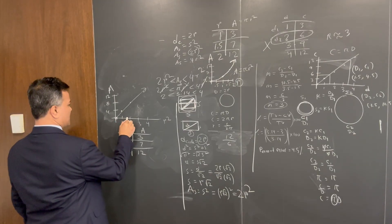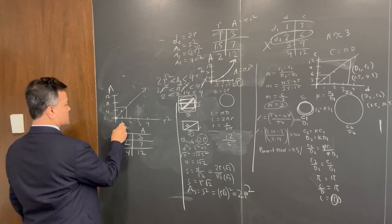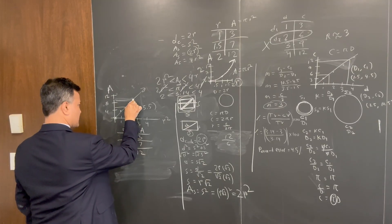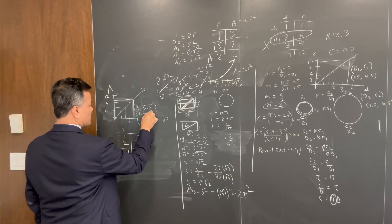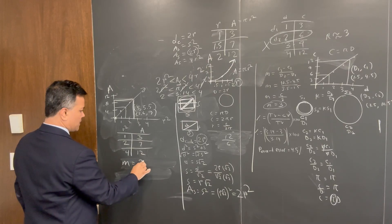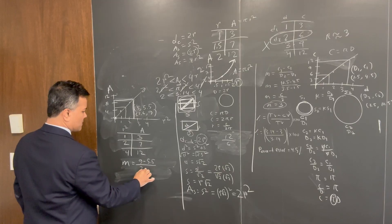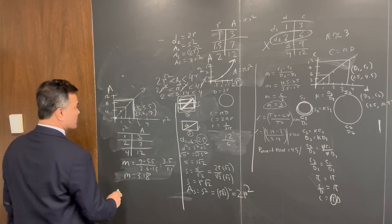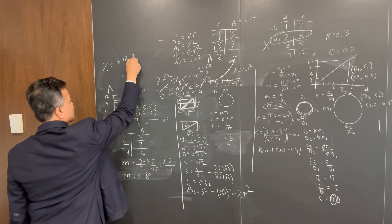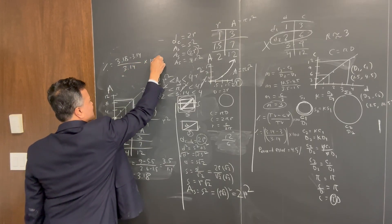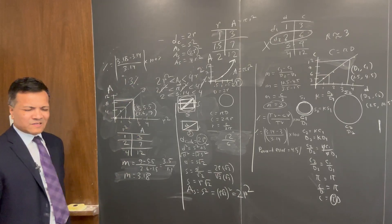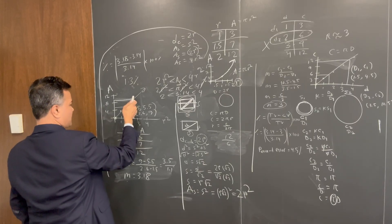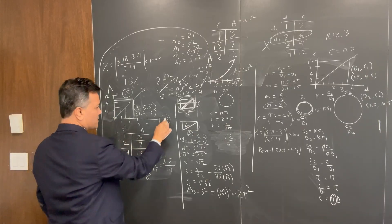To find the slope from the linearized graph, I pick two points from the best-fit line: approximately (1, 5.5) and (2.6, 9). So slope equals (9 − 5.5) over (2.6 − 1), giving approximately 3.18. We've successfully linearized the quadratic relationship, and the slope is π — confirming A equals π·r squared.